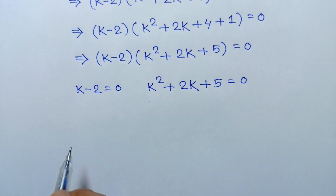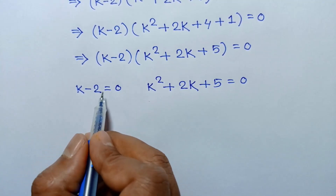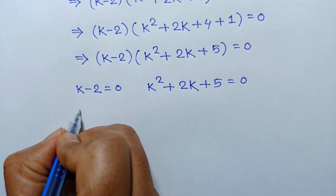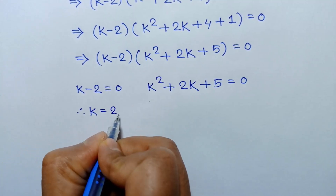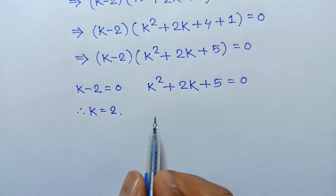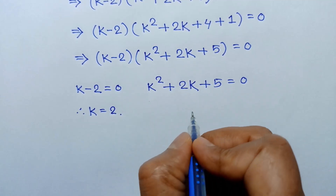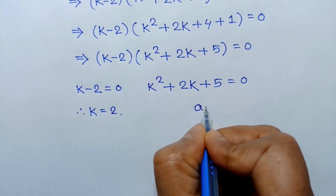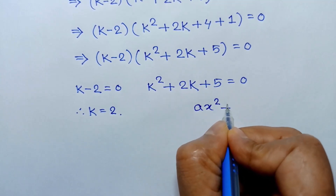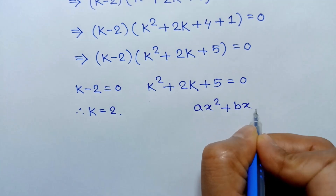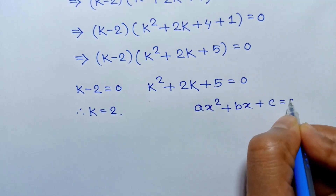For the first equation, taking 2 to the right side, we have the value of k is equal to 2. The second is a quadratic equation. The general quadratic equation is ax square plus bx plus c is equal to 0.